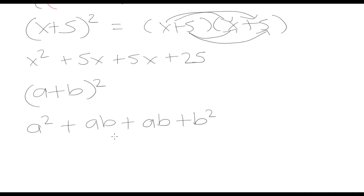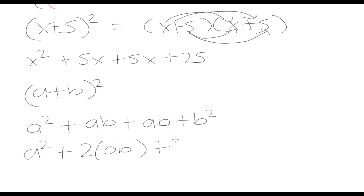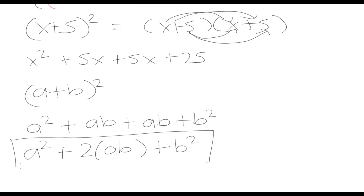5x is ab and b squared is 5 squared which is 25. So we can simplify the formula as a squared plus 2ab plus b squared. This is the exact formula you can use to calculate the answer when squaring a binomial.